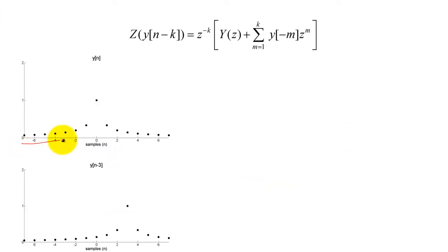If we do not truncate Y of n at 0, the delay property is more complicated. Essentially, we still multiply capital Y of Z by Z to the negative k, but we also have to add in a second Z-transform of the negatively-indexed samples that were previously excluded.